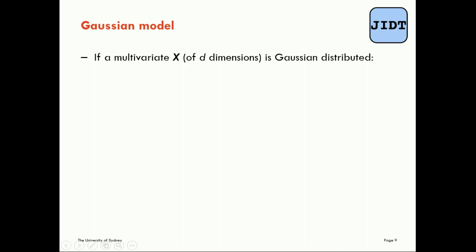Welcome back to our session on information theoretic estimators and the use of those in the JADT toolkit. In this short video we're going to look at making these estimates of information theoretic measures using a Gaussian model. What I mean by that is that these estimators assume the data is Gaussian distributed.